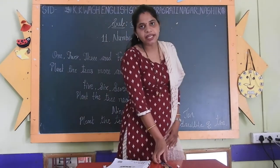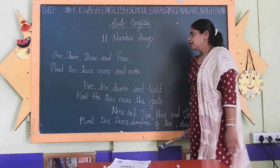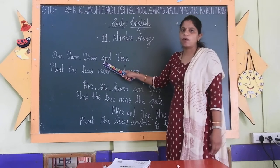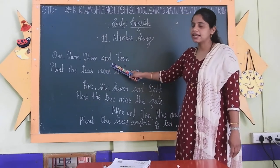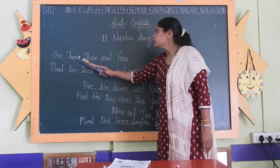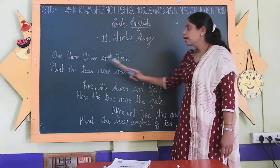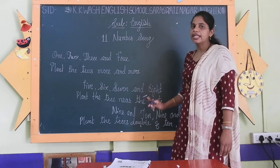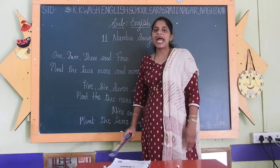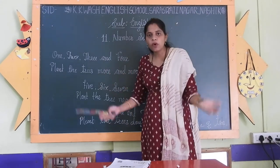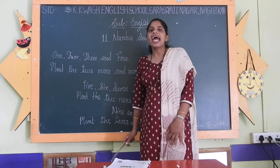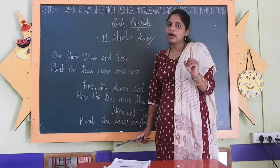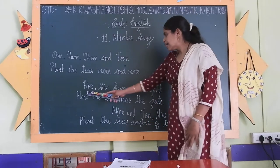So, now students, we will see the poem. See this first stanza. What did the poet say? Poet said that 1, 2, 3 and 4, plant trees more and more. It means we have to plant more and more trees — at least one tree in a week.